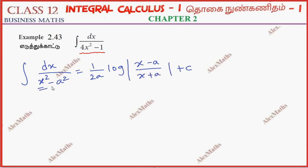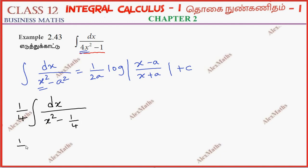Now we have 4x squared, so 4 is common. Taking 1 by 4 outside, the denominator becomes dx by x squared minus 1 by 4, which can be written as dx by x squared minus 1 by 2 whole square.